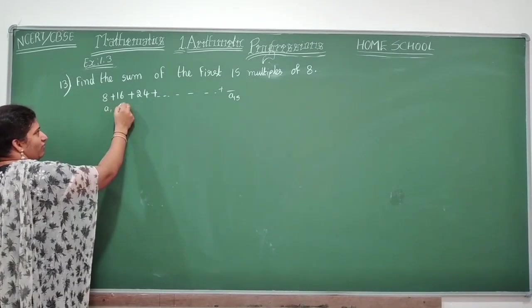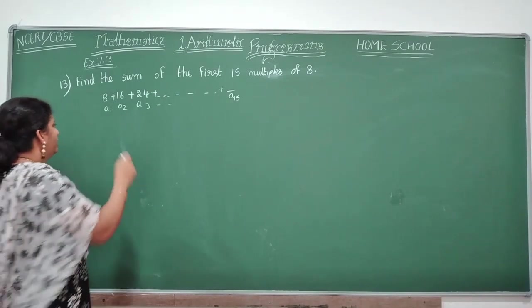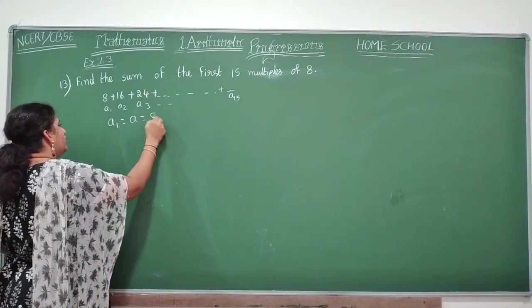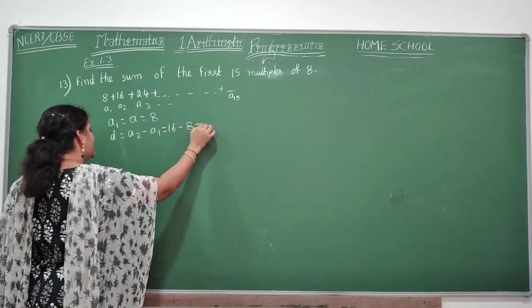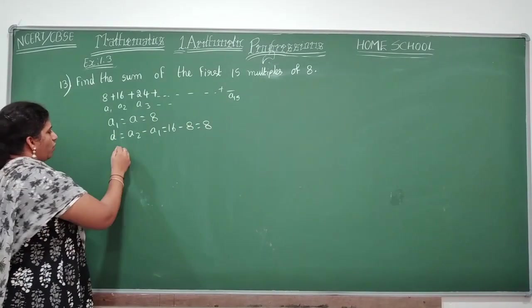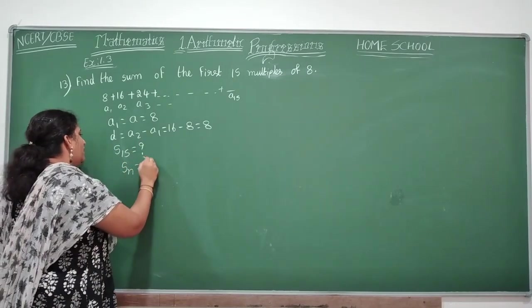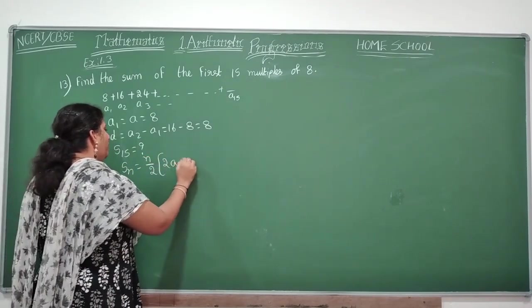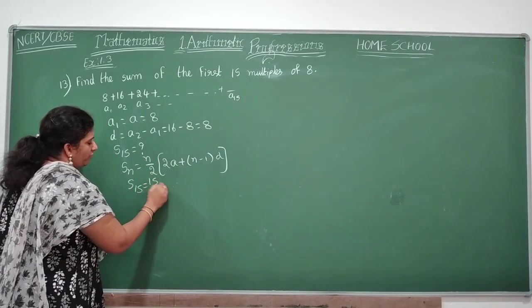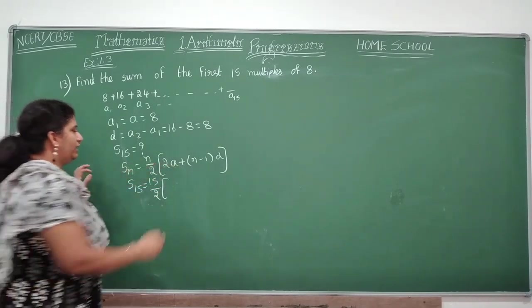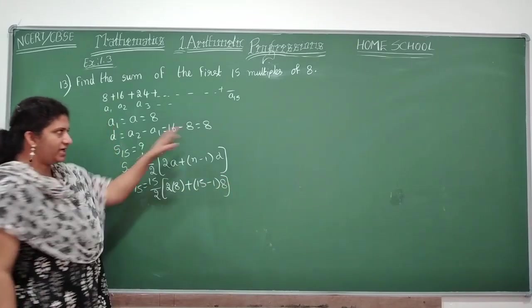So let's start writing here a1, a2, a3, so on. So first we need to find anything, we should find a and d, right? a1 is equal to a is equal to 8. And what's your common difference? a2 minus a1, that will be 16 minus 8, that is equal to 8. Now what is your question? S15 is equal to question mark.